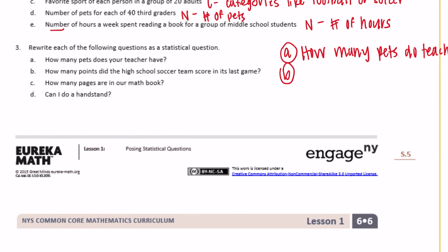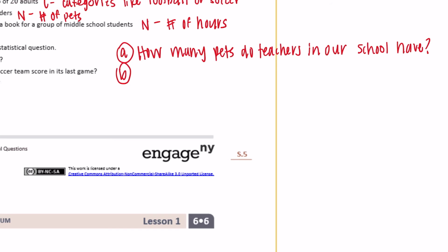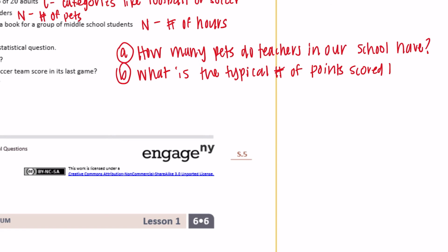Part B: 'How many points did the high school soccer team score in its last game?' That's just one game. We can make it statistical by asking: 'What is the typical number of points scored by the soccer team this season?' — expanding it to cover all the games of the season.